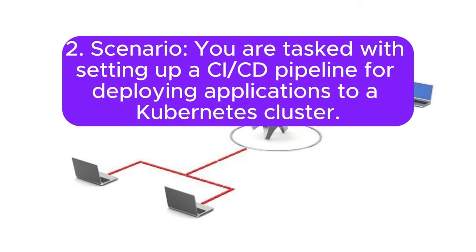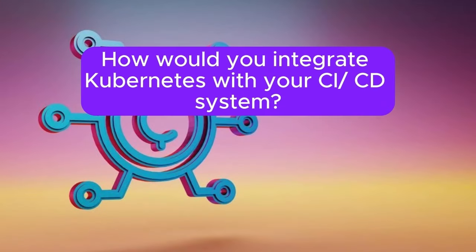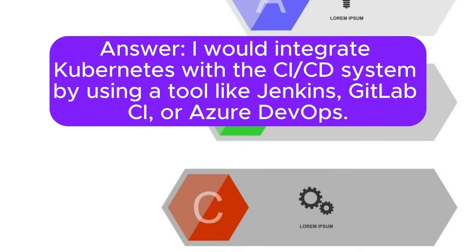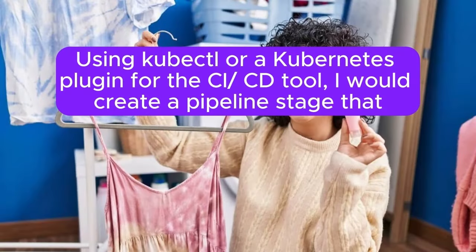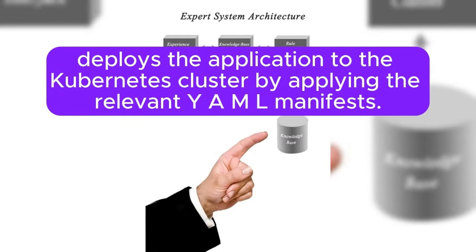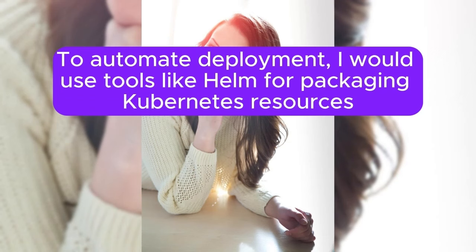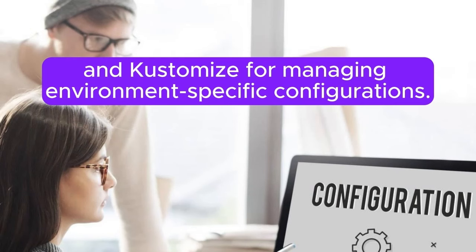Scenario 2: You are tasked with setting up a CI/CD pipeline for deploying applications to a Kubernetes cluster. How would you integrate Kubernetes with your CI/CD system? Answer: I would integrate Kubernetes with the CI/CD system using a tool like Jenkins, GitLab CI, or Azure DevOps. The pipeline would include steps to build Docker images and push them to a container registry like Docker Hub or Azure Container Registry. Using kubectl or a Kubernetes plugin, I would create a pipeline stage that deploys the application by applying YAML manifests. I would use Helm for packaging Kubernetes resources and Kustomize for managing environment-specific configurations.